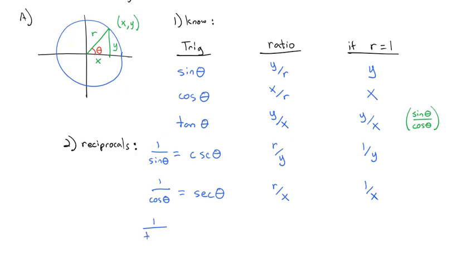We also have a reciprocal of tangent. The reciprocal of tangent we call the cotangent of theta. We just flip the tangent fraction over and it becomes x over y, regardless of whether it's a unit circle or not. Similar to how tangent equals sine over cosine, cotangent is the reciprocal: cosine over sine of theta.